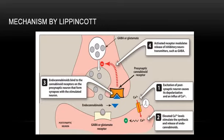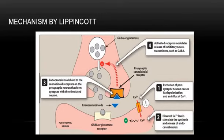Cannabinoids produce their effects by binding to receptors in the CNS. Their agonist dronabinol, a synthetic cannabinoid, is used to treat emesis and stimulate appetite. It can also produce euphoria, relaxation, decrease short-term memory and mental activity, decrease muscle strength, and impair motor ability such that the person is unable to drive a car.